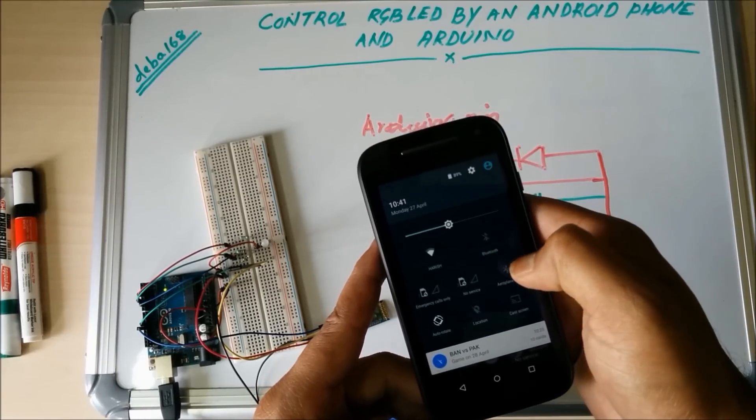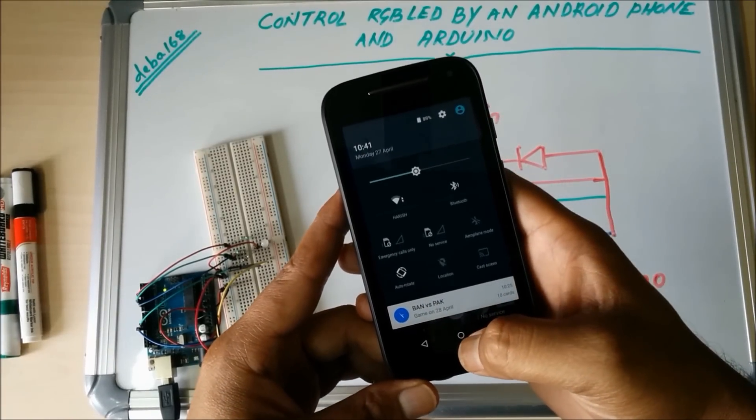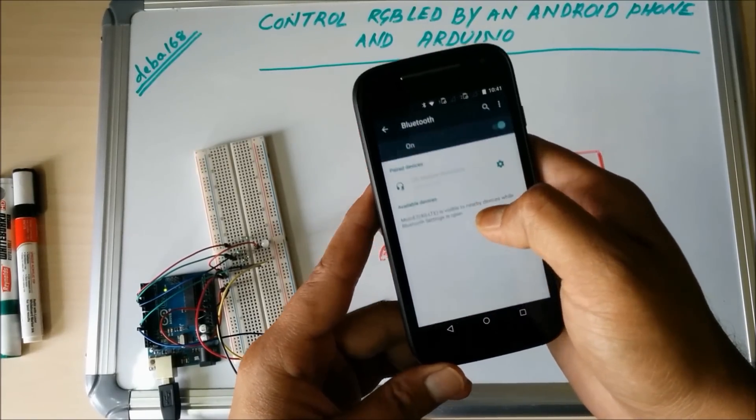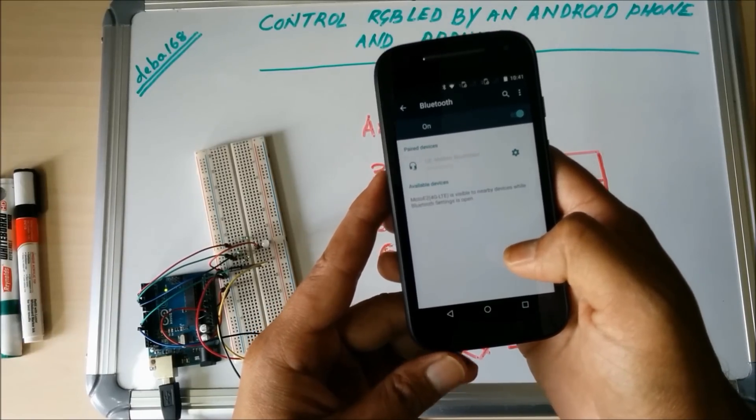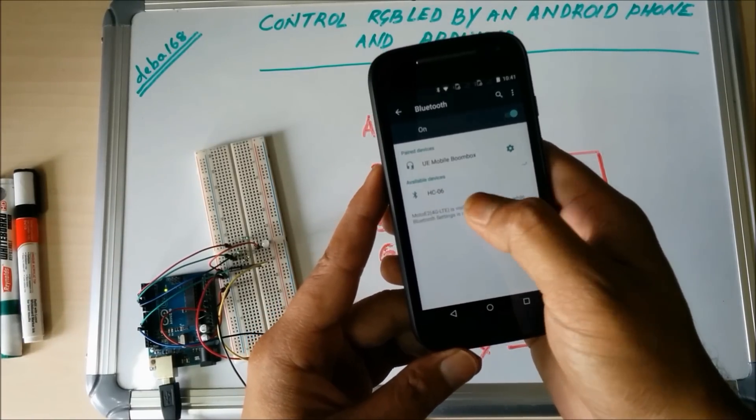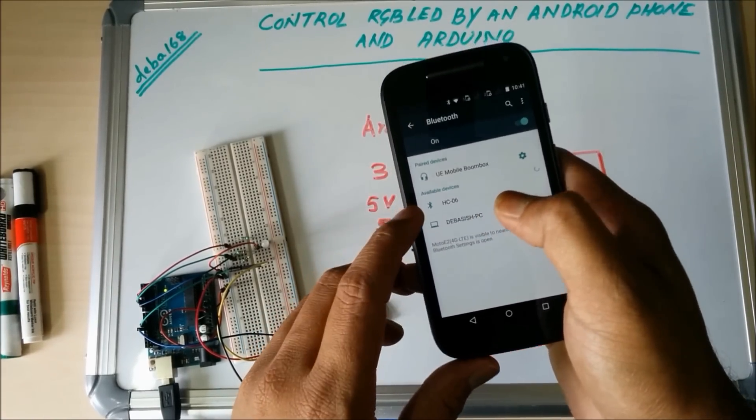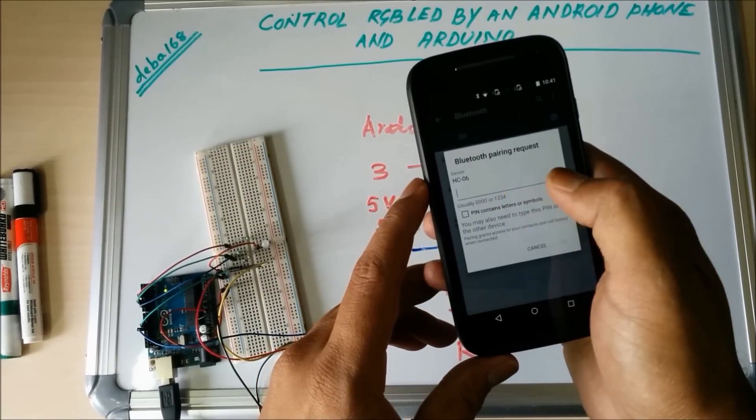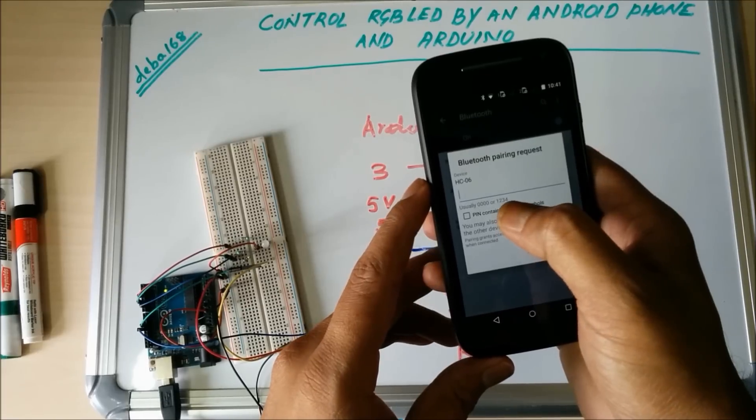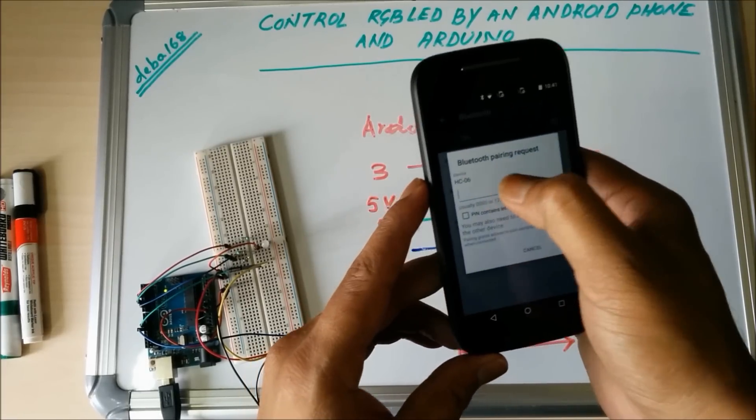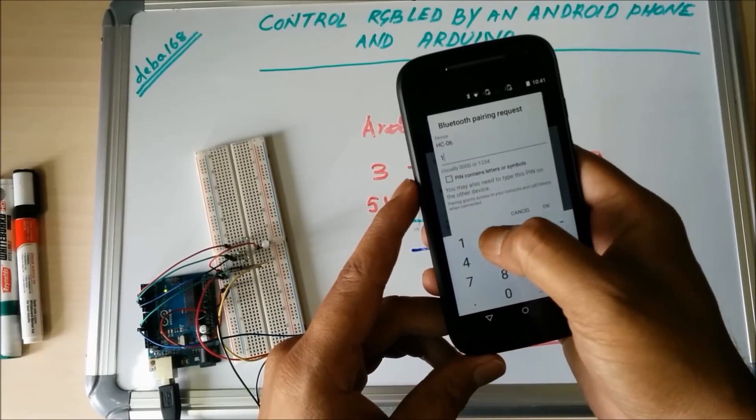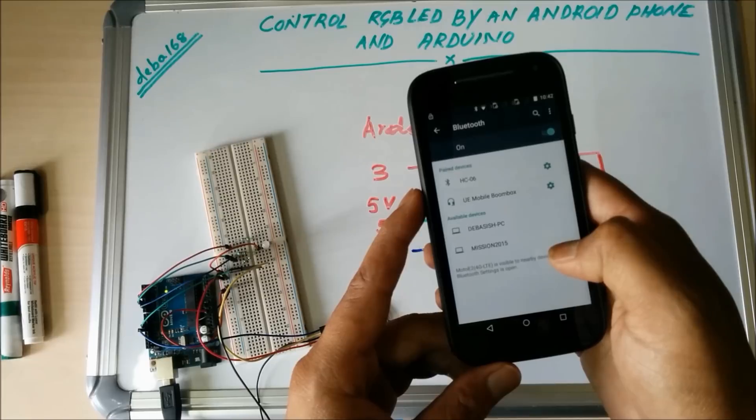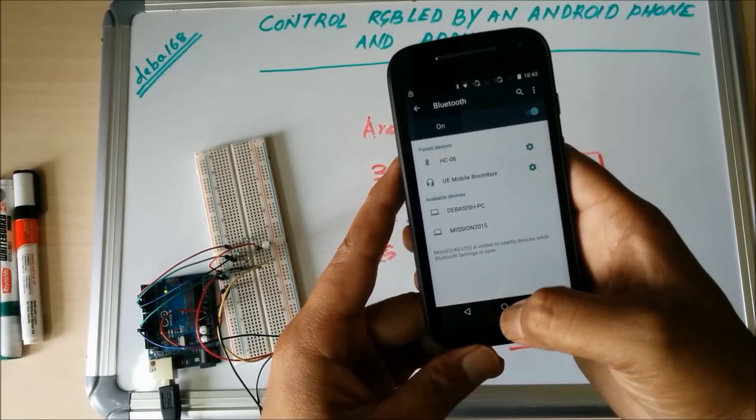Turn on your Bluetooth, then search for the devices. It's searching the available devices near to it. You can see it is HC-06. It asks for passcode and the default passcode is 1234. OK. Yes, now it is paired.